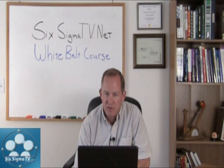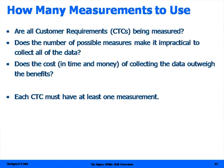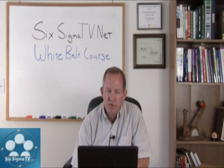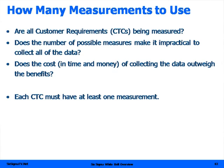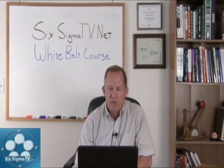How many measures do we use? We need to make sure that all the measurements critical to the customer are being measured. Does the number of possible measures make it impracticable to collect all the data? That's why we want to prioritize these measures, making sure we get the ones with the most leverage on our Y's or the biggest impact on our outputs. Does the cost of collecting the data outweigh the benefit? One thing's for sure — each CTC must have at least one measurement to help predict its output.